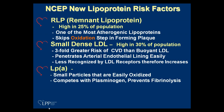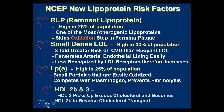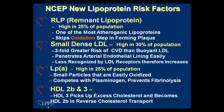LP(a) is another one — it's a small, dense LDL, easily oxidized — but it has another aspect that makes it even more atherogenic: it competes with plasminogen and prevents fibrinolysis. About 25% of the population is high in LP little a, and high is defined as above the 75th percentile.